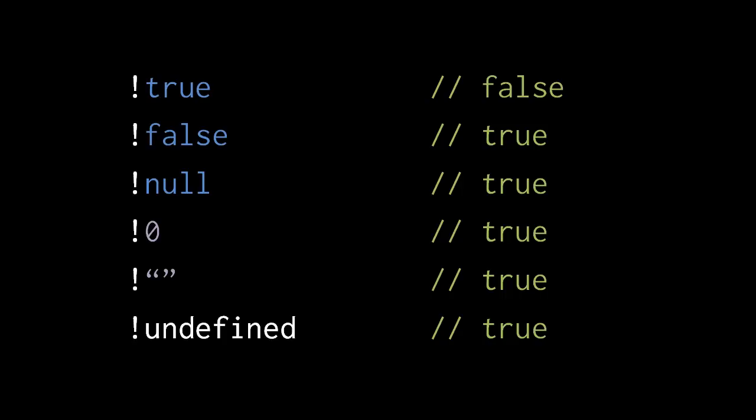Here, then, not true, of course, returns false, and not false returns true, but not null, not zero, not empty string, and not undefined all return true as well, because those values themselves are all considered false for the sake of any logic operation. Again, all values other than these five are considered true.